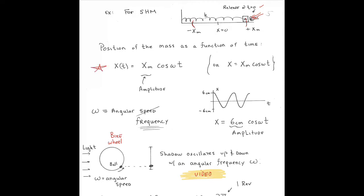This gives us our position of the block as a function of time. Remember we said that the old equation number two — we can't use that because the acceleration's not constant. You saw in the videos, this thing speeds up and it slows down repeatedly. So acceleration's not constant. That's our position as a function of time, and that thing is called the amplitude.